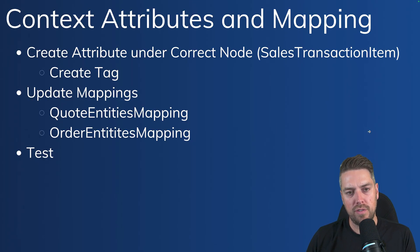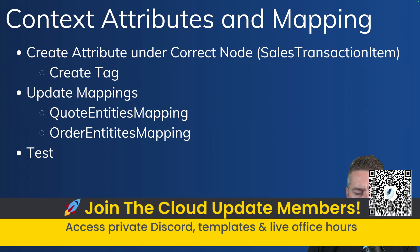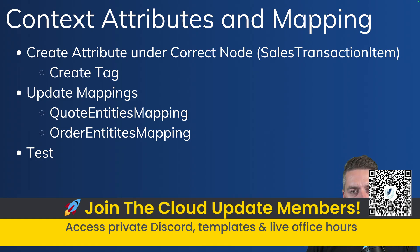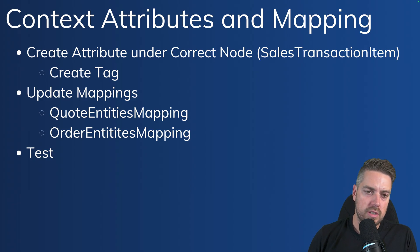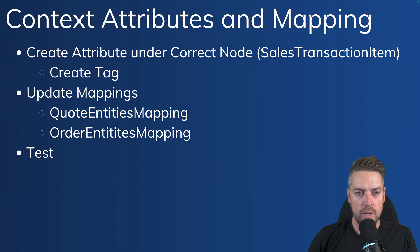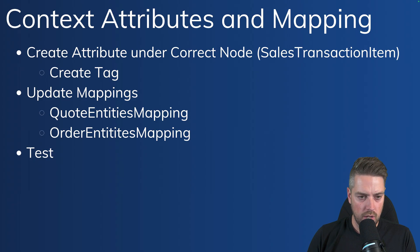So what we first want to do — if I create a new field, and our example will focus on creating a new field on quote line item — creating the field by itself is not enough if we want to leverage that field in pricing procedures, or if we want to map the field from quote line into order product, or simply display the field under the transaction line editor and update the value. So a couple of things I need to do once I've created the fields: create the attribute in the node I want — in our example, that's sales transaction item — then create the tag, and finally update the mappings. In our case, we're going to update the quote entities mapping and order entities mapping.